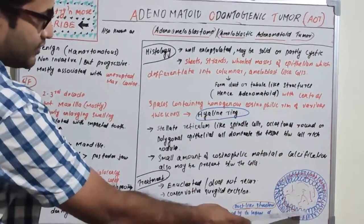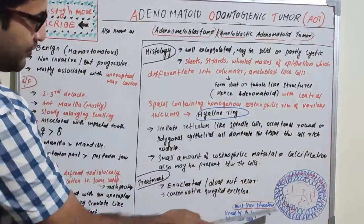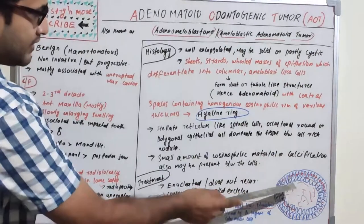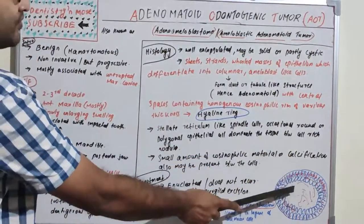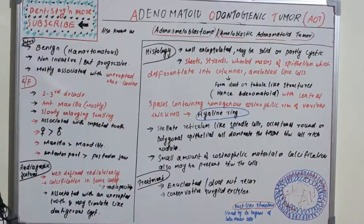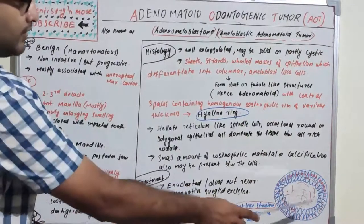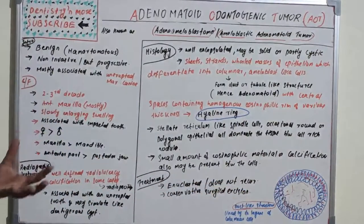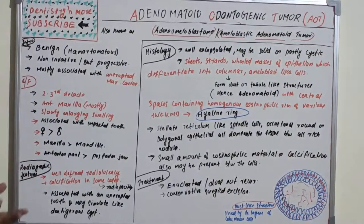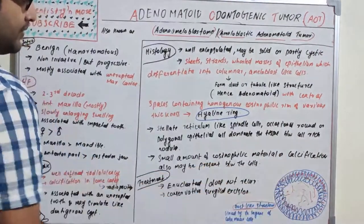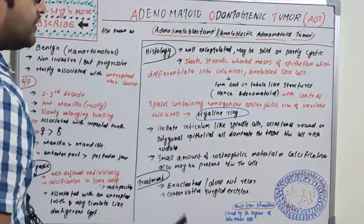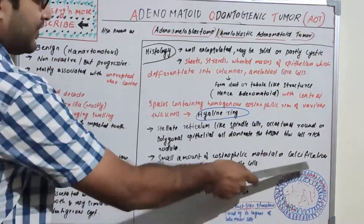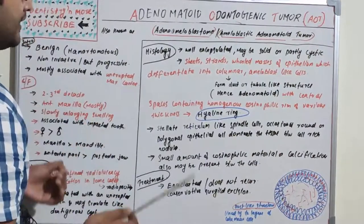The duct-like structures are lined by one or two columnar cells — these are the characteristic features of AOT. The key takeaway is this duct-like structure: it forms by differentiation of columnar cells arranged at the periphery, with one or two columnar cells making a duct-like structure.